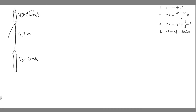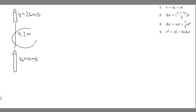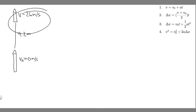I went ahead and drew what's going on here. We have this rocket — we know it's going to be starting from rest, because on the launch pad it's not moving. And then it's going to accelerate up 4.2 meters. After it's gone 4.2 meters, we know its speed is going to be 26 meters per second. So that's basically what's going on.